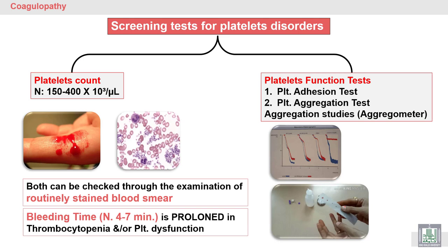Screening tests for platelet disorders: platelet count has a normal range from 150,000 to 400,000. We can check platelet count by routine blood smear to check the count, and we can also check the function of the platelet by a test called bleeding time.